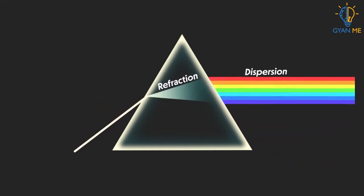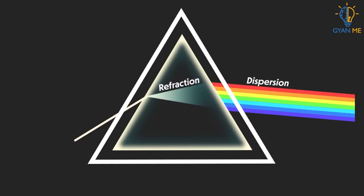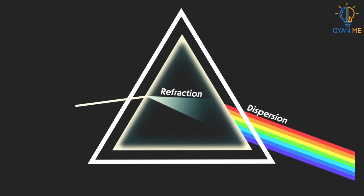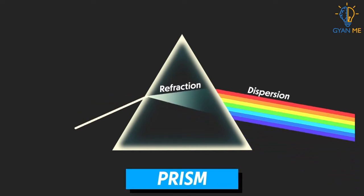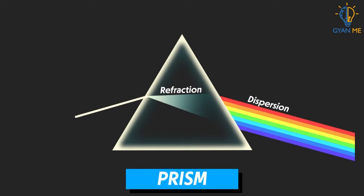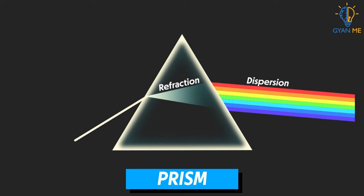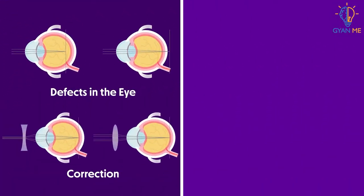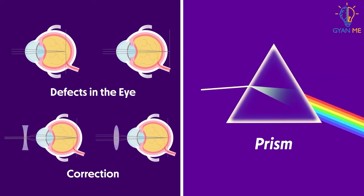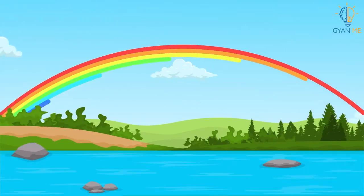Can you see this object here? This triangular, transparent object is a prism. It not only refracts the light, i.e. bends it, but also splits the ray of light into its seven constituent colors. So we will learn about various defects of the eye, their correction, and this wonderful phenomenon in detail in this chapter.